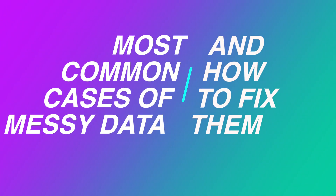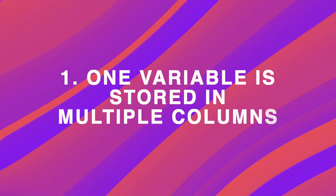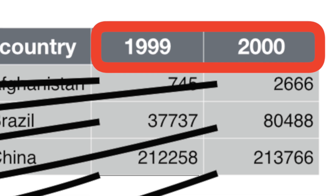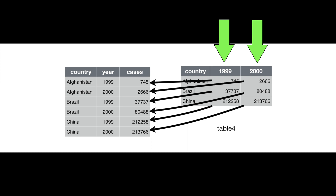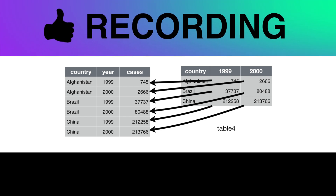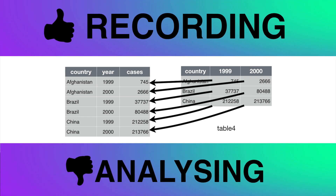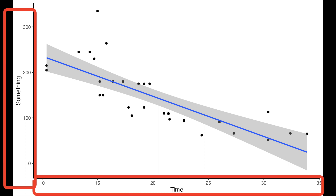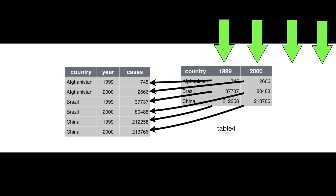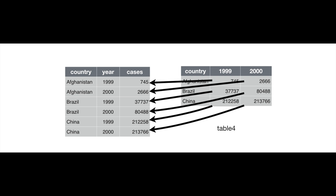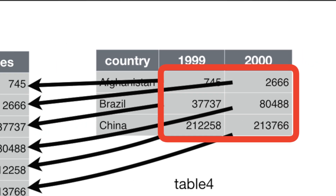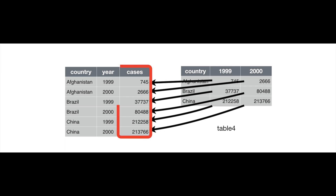Let me show you the most common cases of messy data and how to fix them. The first one is when one variable is stored in multiple columns, or when column headers are actually values, not variable names. Different time points, for example years or days, are usually stored in different columns. And while it might be convenient for recording data, it's hardly possible to analyze it. If we have time, we usually want to study change in something over time — but a variable 'time' does not exist if years are spread across different columns. Moreover, if we see this table for the first time, we have no idea what those numbers are, so they are also not a variable, because they are not in a single named column.